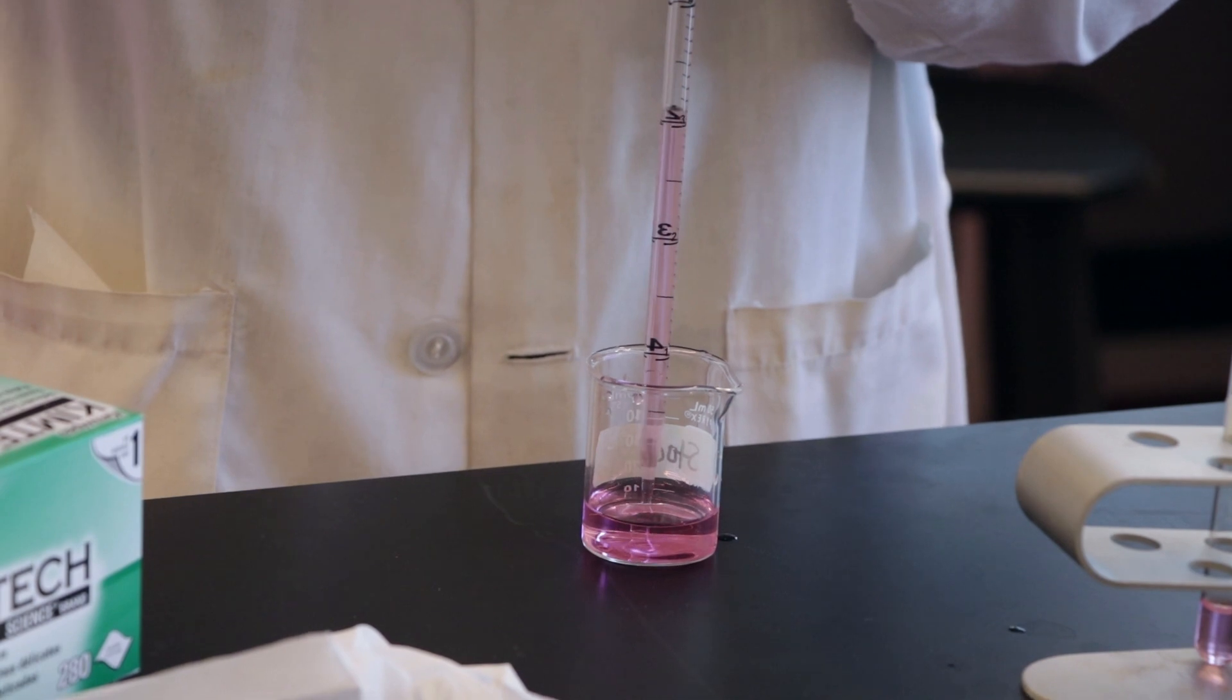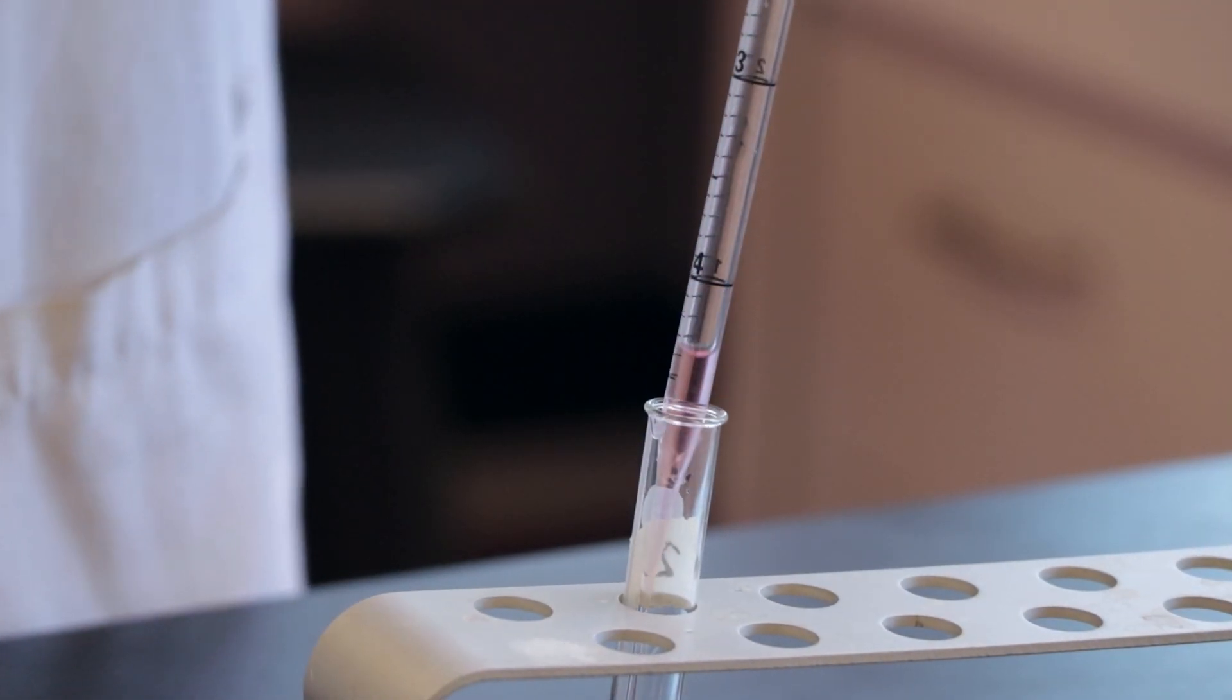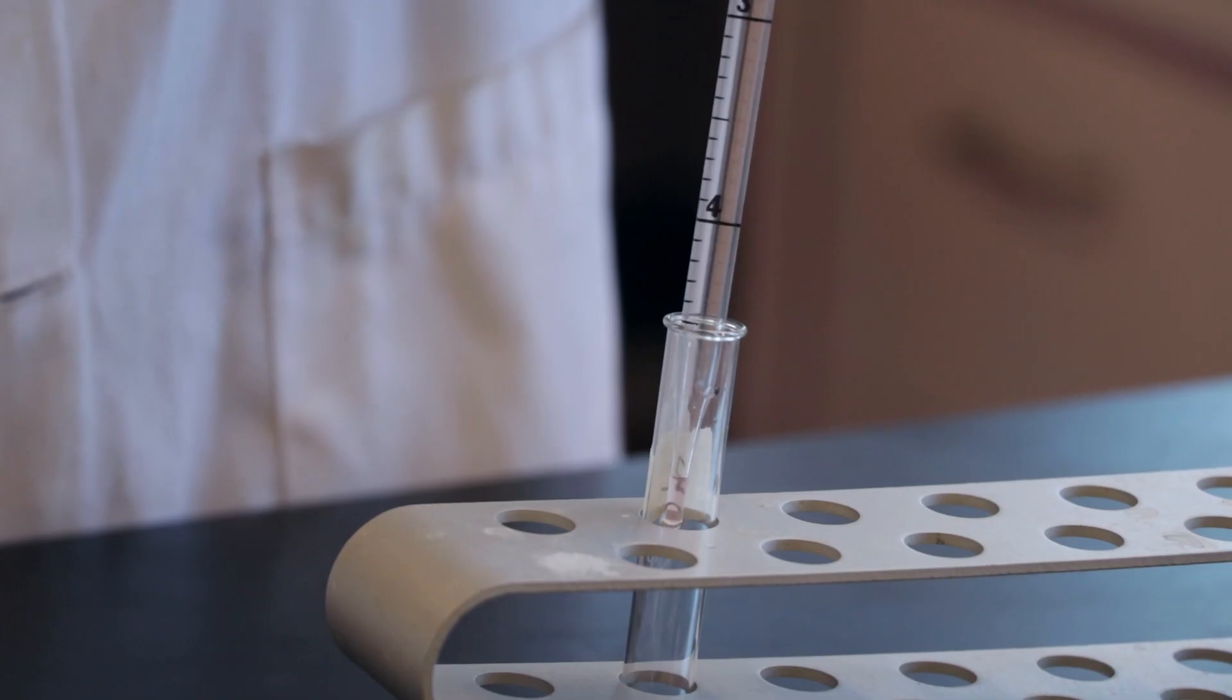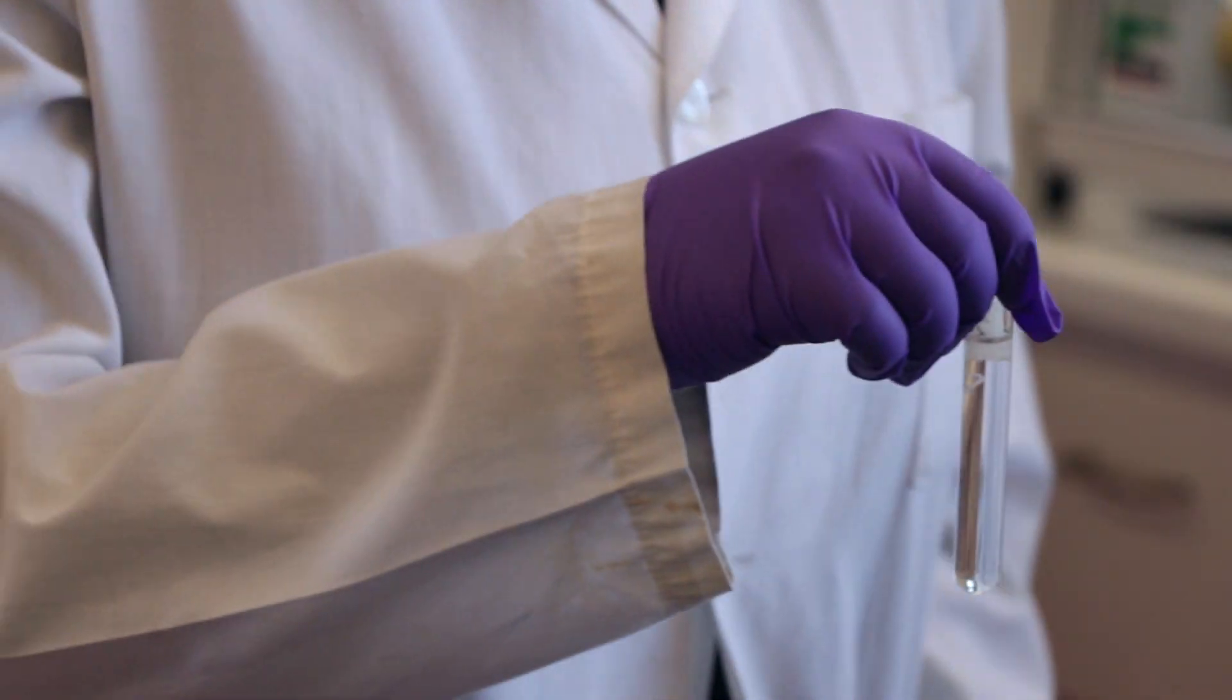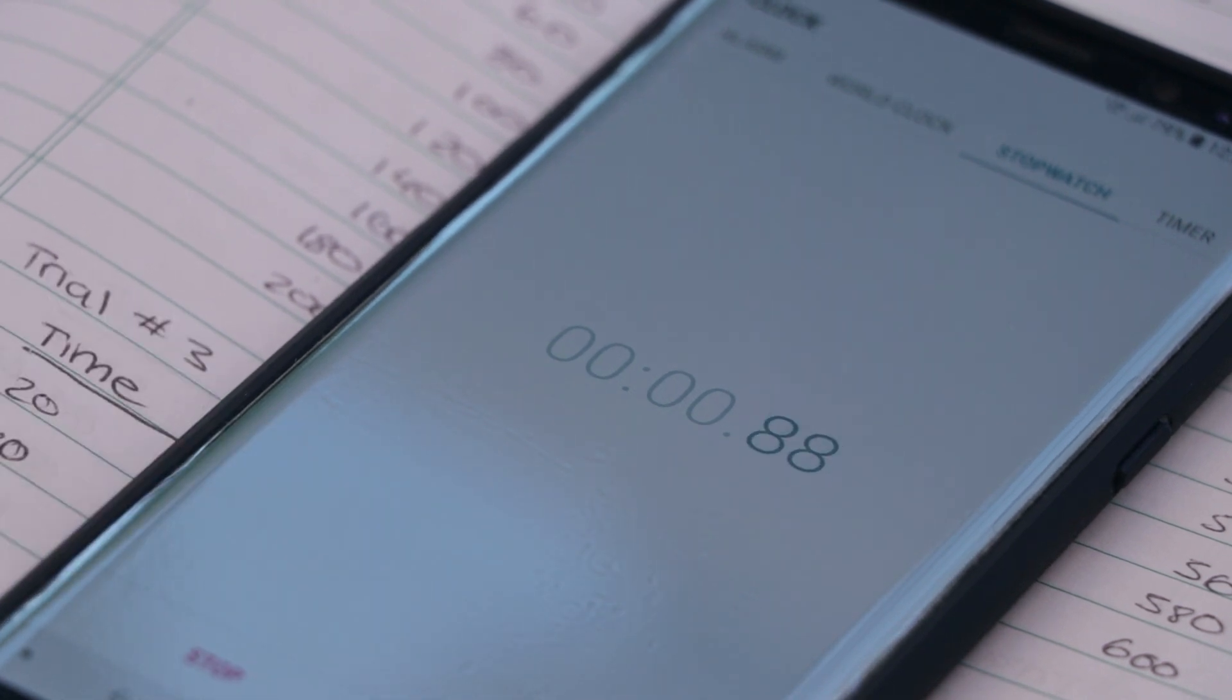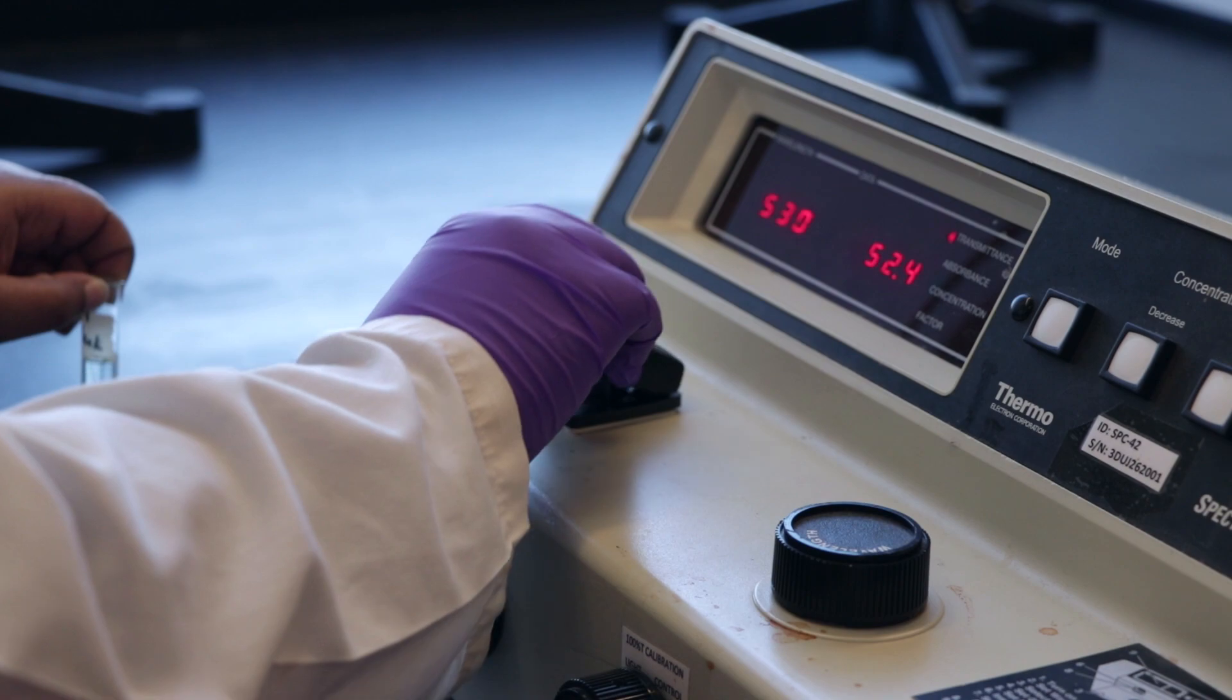For trial 1, add 2 milliliters of your dye solution and 3 milliliters of distilled water to a clean cuvette. When ready to commence your trial, add 1 milliliter of bleach to the cuvette. Your partner should start timing at this stage with their phone. Quickly and carefully place the cuvette in the spectrometer and record the transmittance.